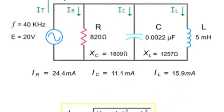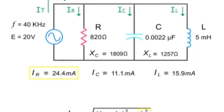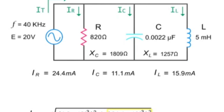To calculate the total current through a parallel circuit, take the square root of the quantity current through the inductor minus the current through the capacitor, squared, plus the current through the resistor, squared. Thus, taking the square root of (15.9 milliamps minus 11.1 milliamps) squared plus 24.4 milliamps squared gives a total current of 24.9 milliamps.